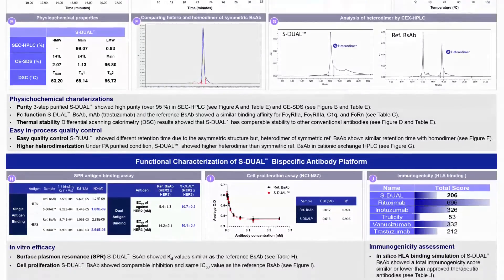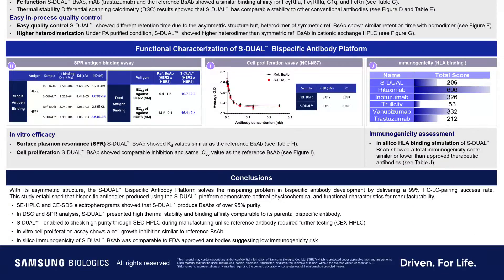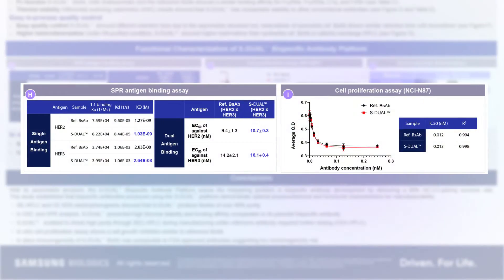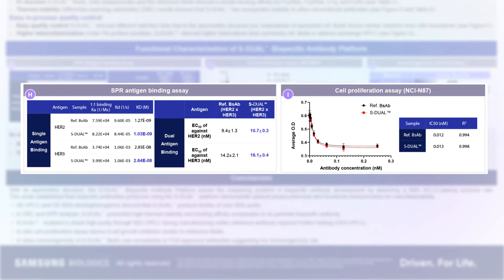The next set of data assesses whether biological functions are maintained when plugging your CDR into the S-DUAL platform. Even when your CDR is incorporated into S-DUAL, there is no discernible impact on binding affinity or biological functions. Therefore, we believe that you can seamlessly insert a CDR you discovered through hit screening into S-DUAL and advance development.